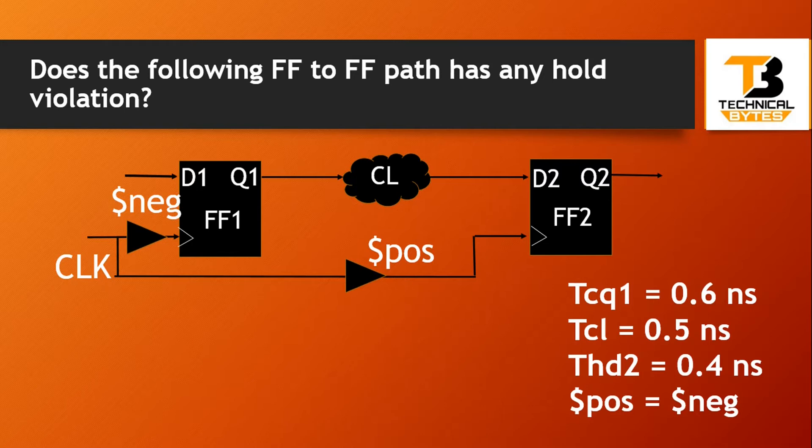Does the following flip-flop to flip-flop path have any hold violation? I have given some numeric values: TCQ of the first flip-flop is 0.6 nanoseconds, TCL, the delay of this combinational logic, is 0.5 nanoseconds, and THD2, the hold time of the second flip-flop, is 0.4 nanoseconds.